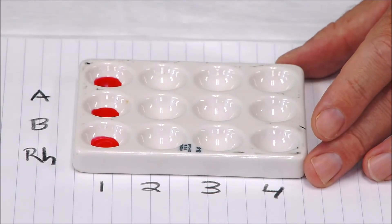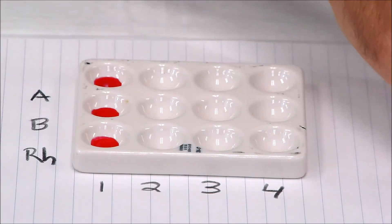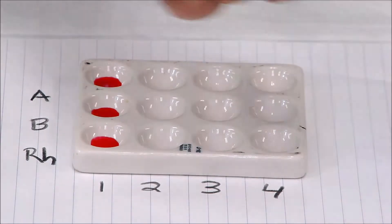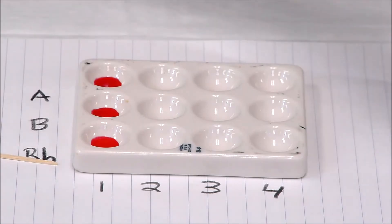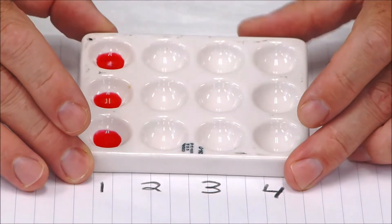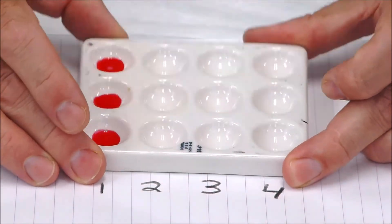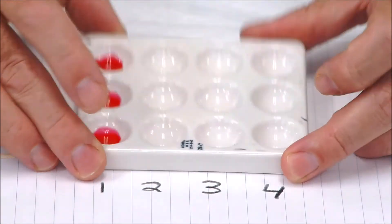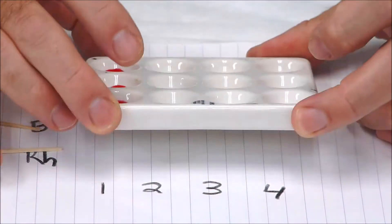Now at this point we need to mix our samples around. You can use toothpicks, so I have some here, but if I do use toothpicks I want to make sure that I use a different toothpick for every sample in every well because I don't want cross-contamination. I'm going to do it without the toothpicks—I'm just going to try to agitate a little bit, going up and down. We're looking for clumping or agglutination.